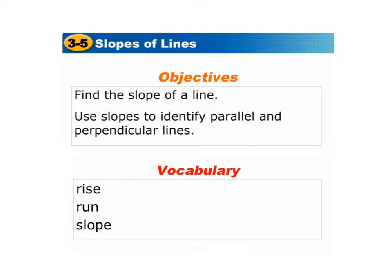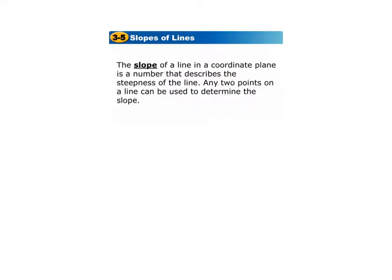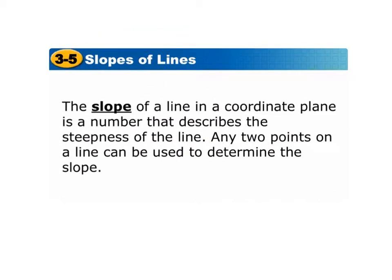So 3.5 deals with slopes of lines. The objective of this lesson is to find the slope of a line and use slopes to identify parallel and perpendicular lines. Our vocab is rise, run, and slope. The slope of a line in a coordinate plane is the number that describes the steepness of the line.